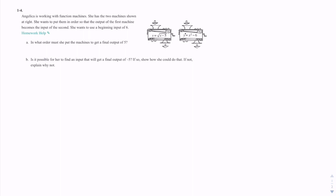The question says that the beginning input is 6. For part A, in what order must you put the machines to get a final output of 5?